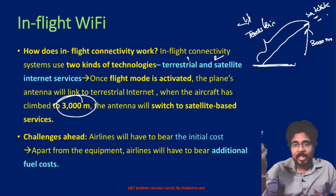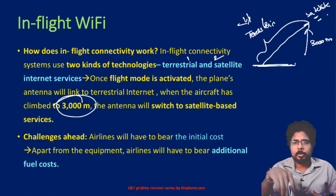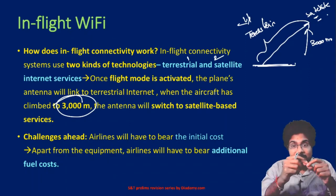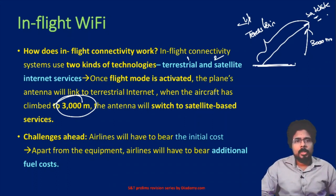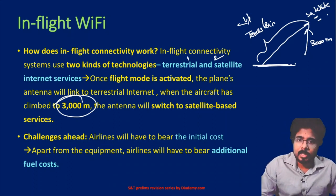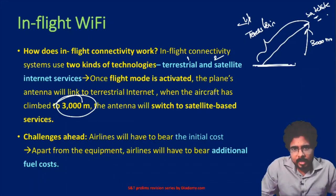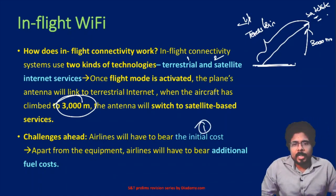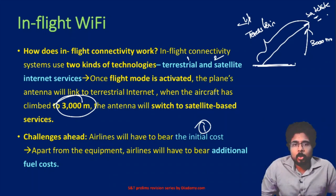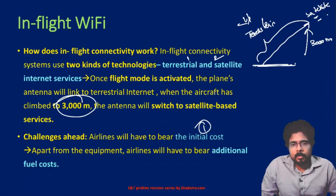After reaching three kilometers, the flight will use the satellite connection to provide internet to customers. The advantage is that you will be able to use the internet seamlessly — internet will be there continuously for every passenger. Now, what are the challenges? There are a lot of challenges. The initial cost is very high. All the aircraft have to bring in new systems, change a lot of things, and bring new routers and equipment.